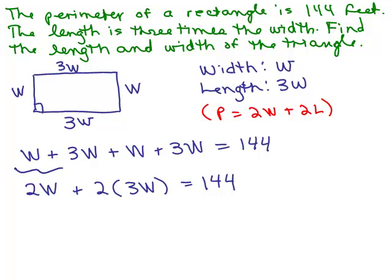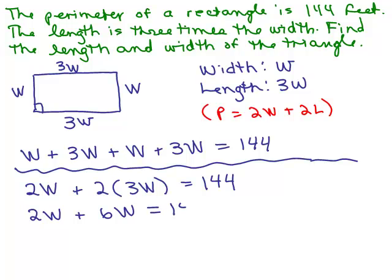So let me show you the steps had you written it this second way. 2W plus 6W equals 144, or 8W equals 144. And hopefully you'll notice that that's the same thing you would get if you added the like terms from this first equation I wrote. So there are a couple ways of doing it. Let's go ahead and finish this. How do you solve for W now? You need to divide both sides by 8.